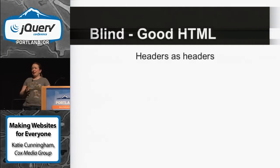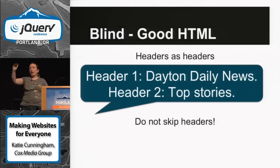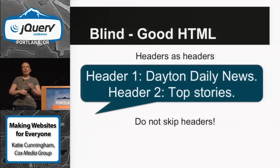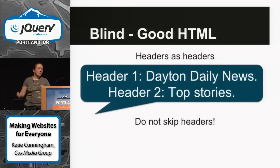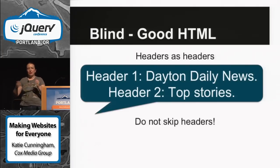You also want to use your headers as headers. This is something I see all the time, especially since Bootstrap. You want your headers to first be used as headers, and you don't want to skip them. Don't go from header one to header four to header six — use one, two, three in order. Screen readers announce headers, so it'll say 'Header one: Dayton Daily News.' If it jumps to header four, it sounds like data was skipped. Chunks of pages can disappear because they landed somewhere inaccessible.